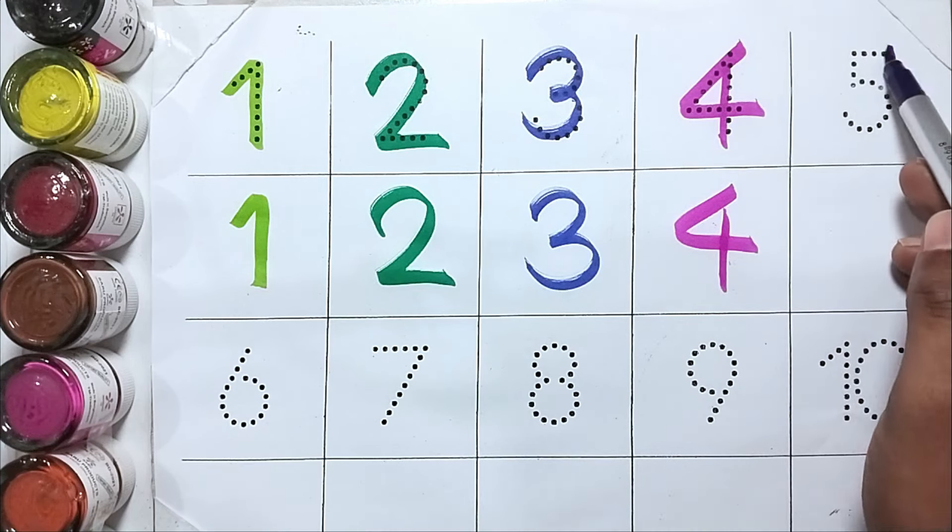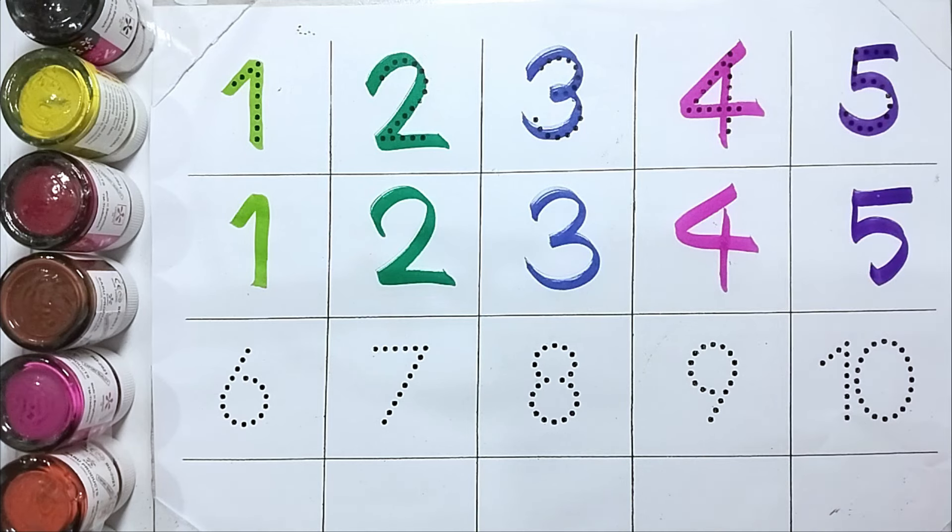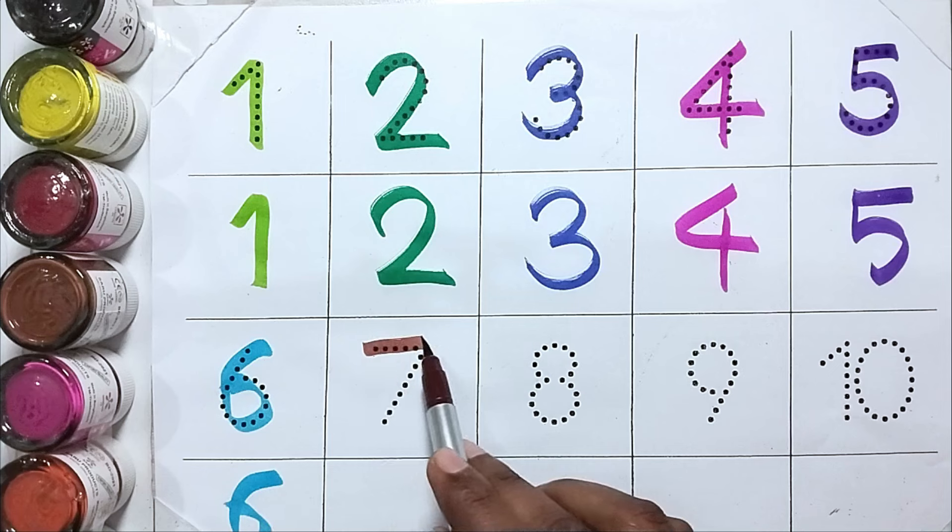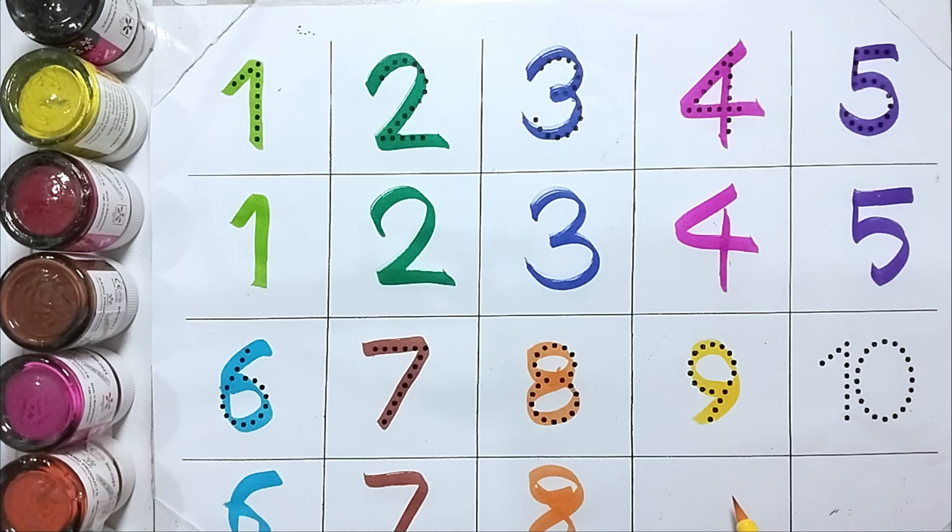Five, F-I-V-E, five. Six, S-I-X, six. Seven, S-E-V-E-N, seven. Eight, E-I-G-H-T, eight. Nine, N-I-N-E, nine.